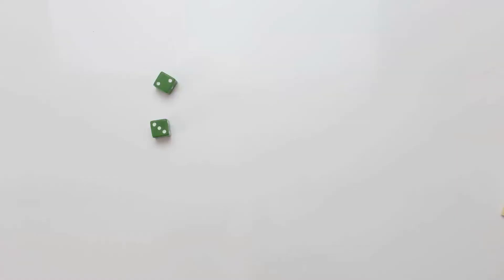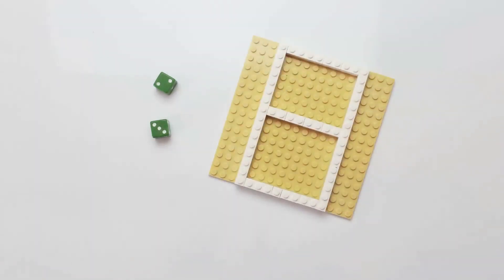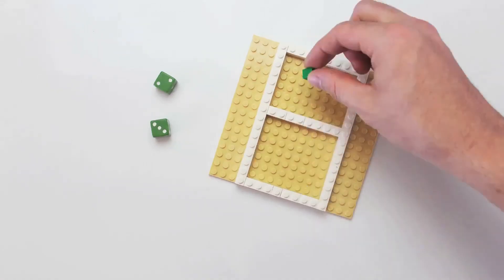Player 1 rolls the cubes. For this example, we'll use 2 and 3 as the two digits rolled. Player 1 builds a game board with 2 blocks, modeling the multiplier of 2.